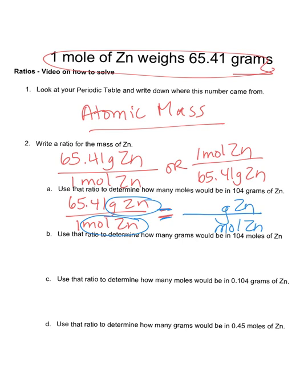Now it tells me, determine how many moles would be in 104 grams of Zn. Since it says 104 grams of Zn, I put 104 next to the grams of Zn. I'm solving now for moles, so I'm going to put an X there. Now to solve this one, I would cross multiply. So 104 times 1 equals 65.41x. To solve for X, I divide both sides by 65.41, and I'm going to end up with about 1.59 moles of Zn in that problem.